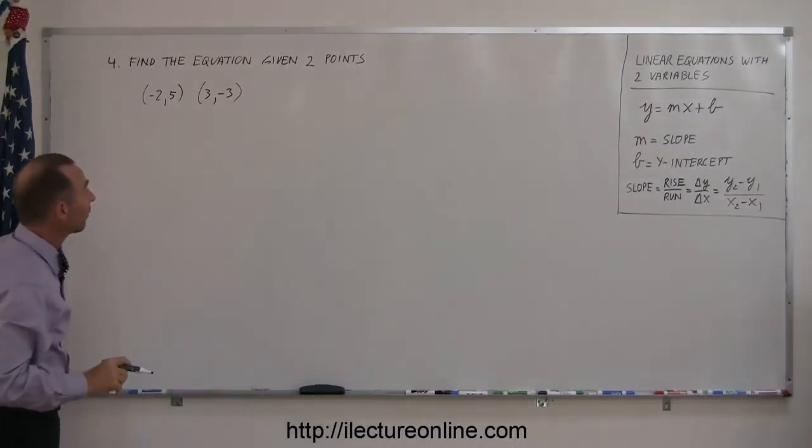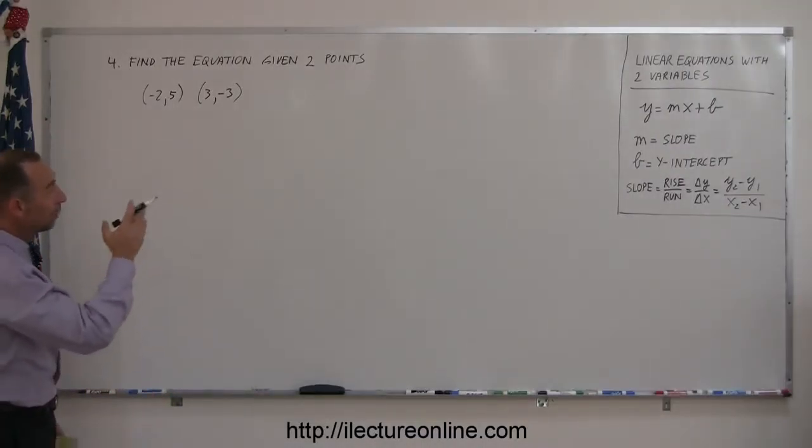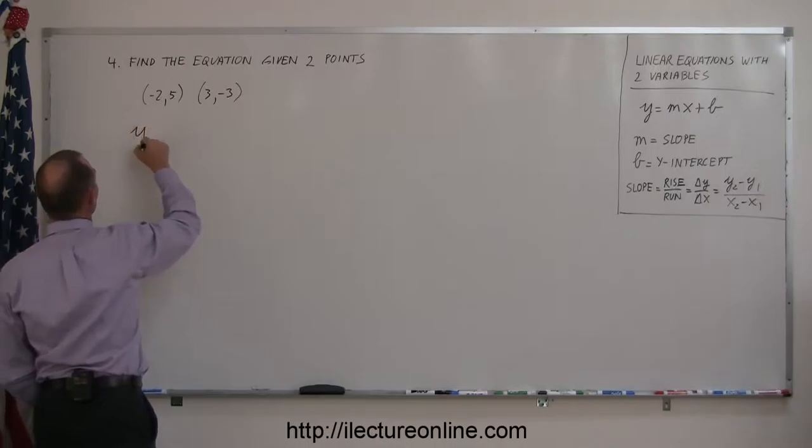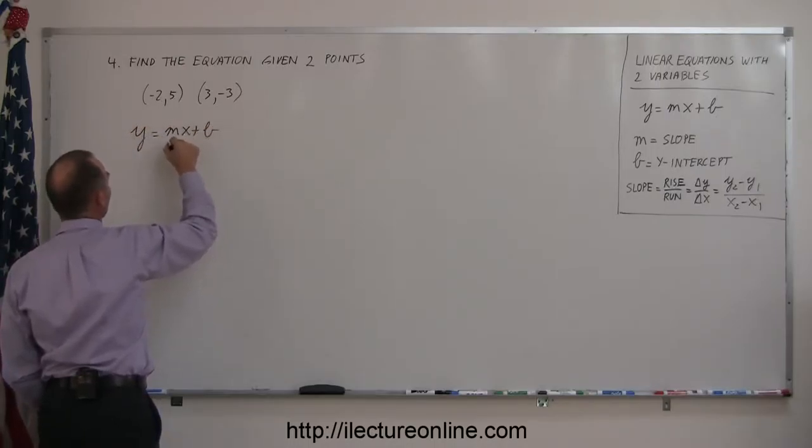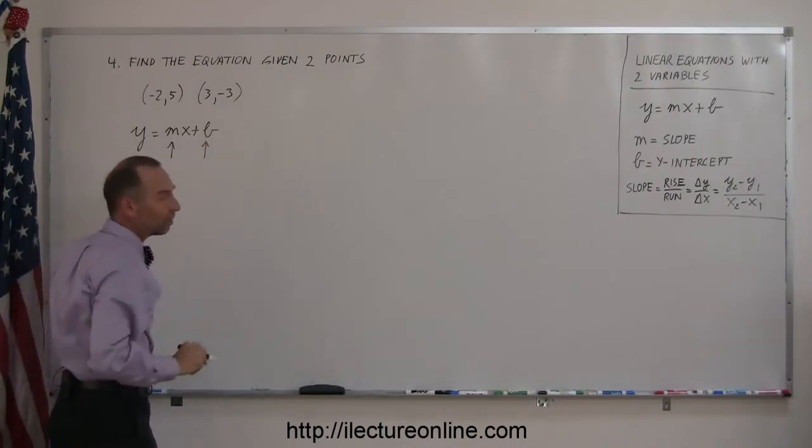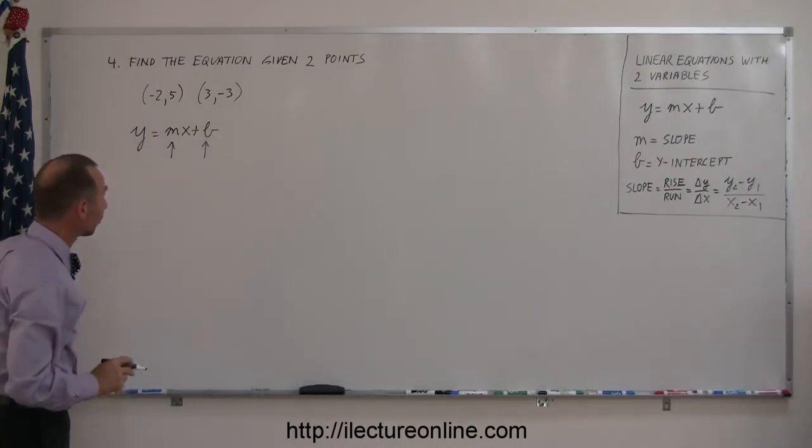We're supposed to find the equation of a line given two points, and we know that the equation needs to look in the form y equals mx plus b, which means I'm supposed to find my slope and my intercept, starting with finding the slope.